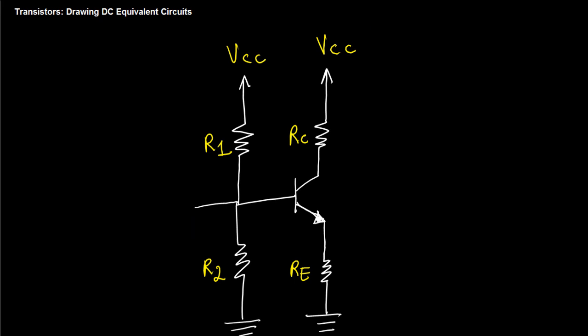So all I'm left with is this, and that's my DC equivalent. Now the reason you do this is to find your Q point. Every time you have a transistor circuit you want to do DC analysis.